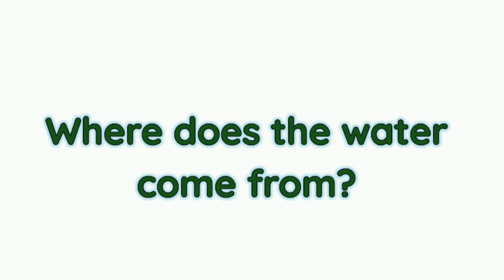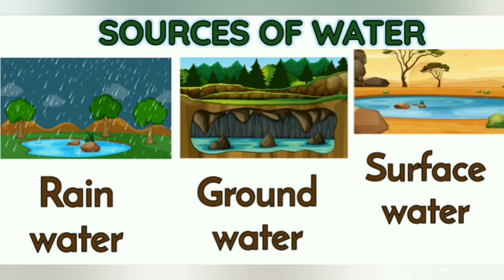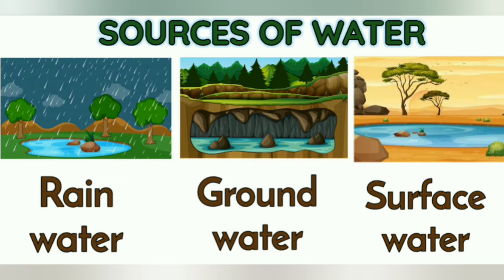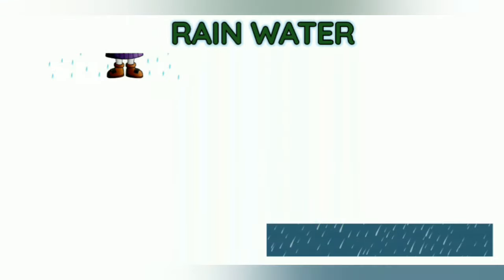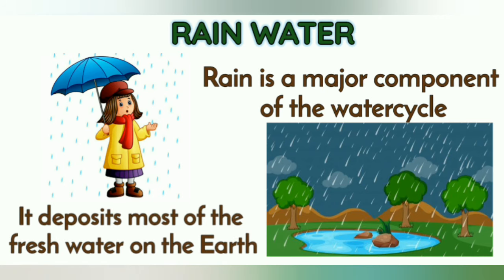Where does the water come from? Now we will learn about the sources of water. There are mainly three sources of water: rainwater, groundwater, and surface water. Rain is the main source of water — it deposits most of the freshwater on the earth.